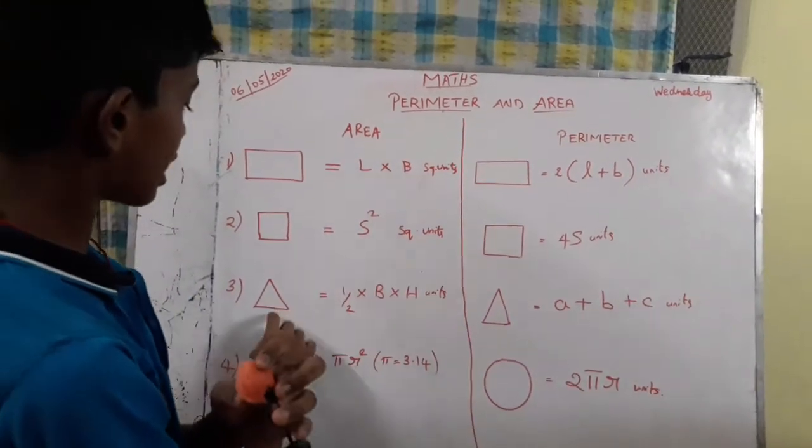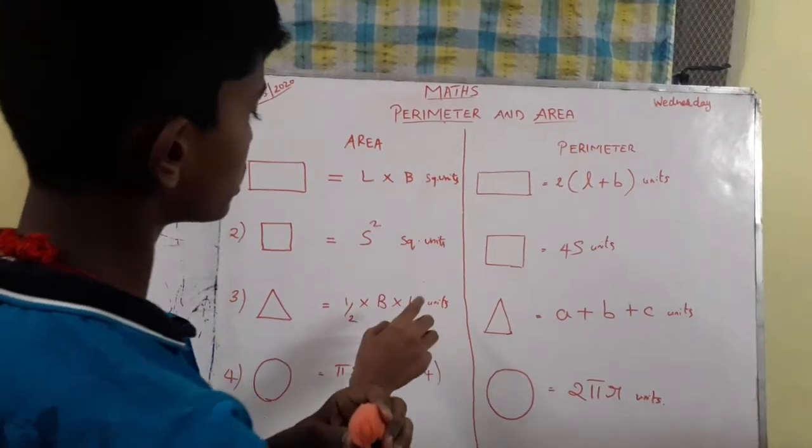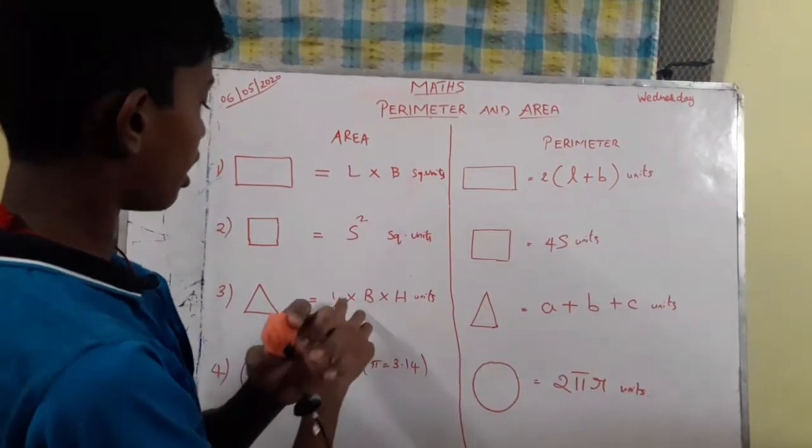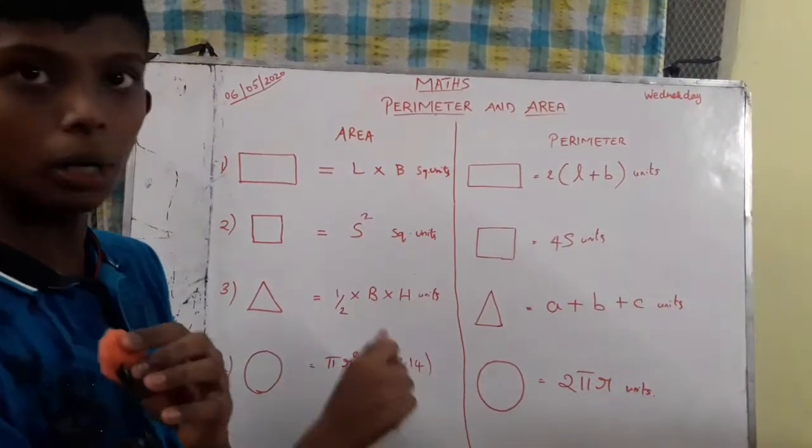For the next example, we have area of triangle. The area of triangle is half into B into H units. Half is 1 by 2, or 0.5.